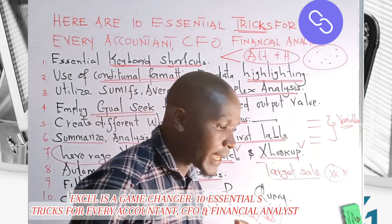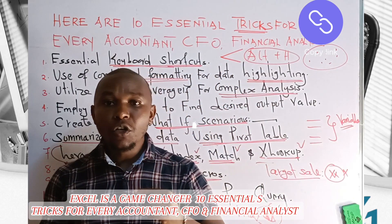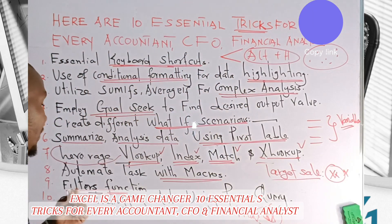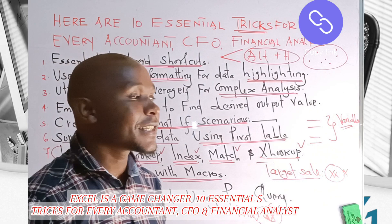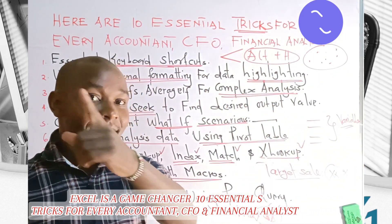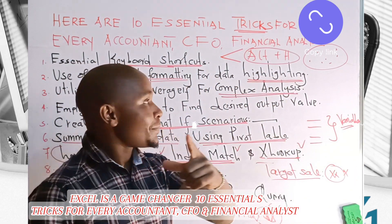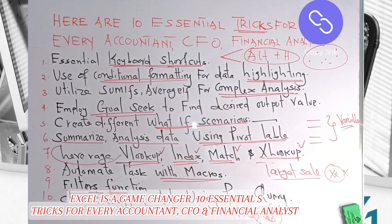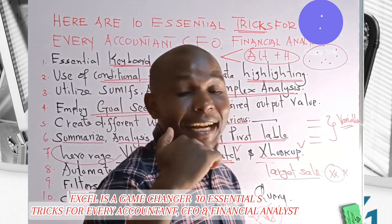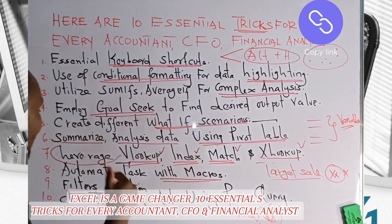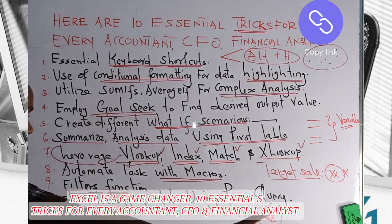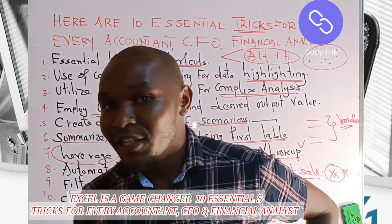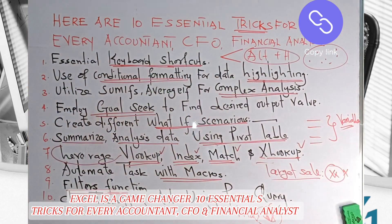Trick number nine is the Filter function. There is not a single moment in accounting work where you will not use the Filter function. If you are in a role where you are not using the Filter function from morning to evening, then you are not in an accounting or finance position. Make sure you are using it daily — if not, reconsider your role.